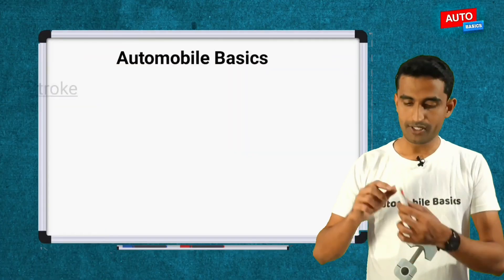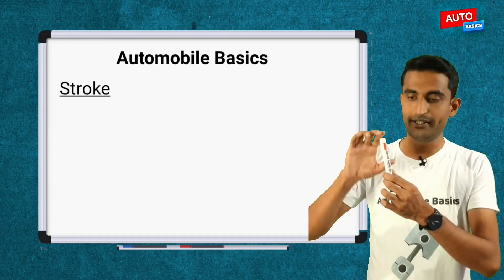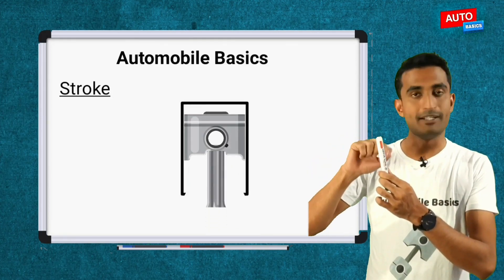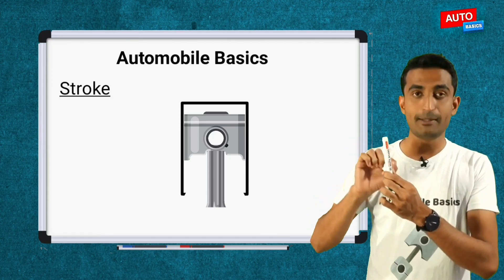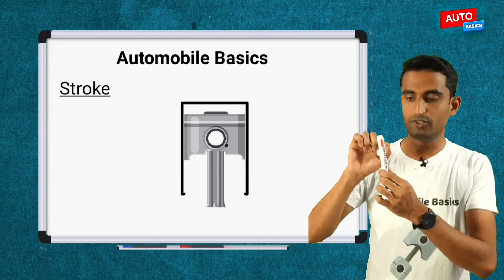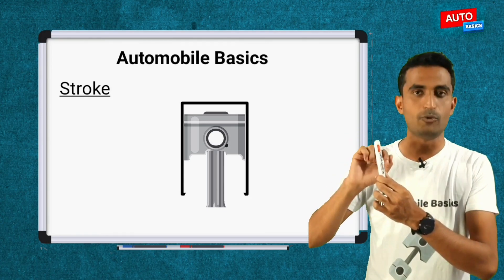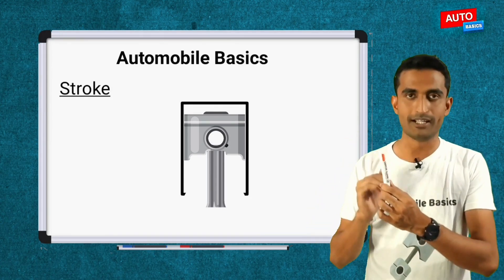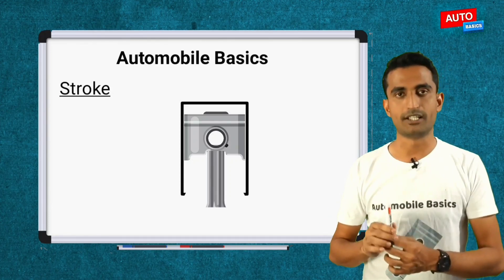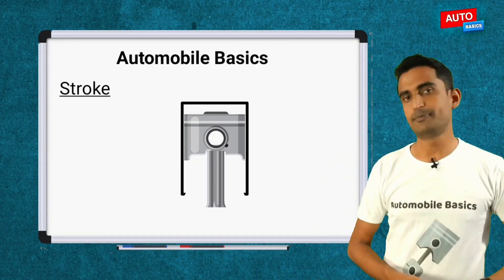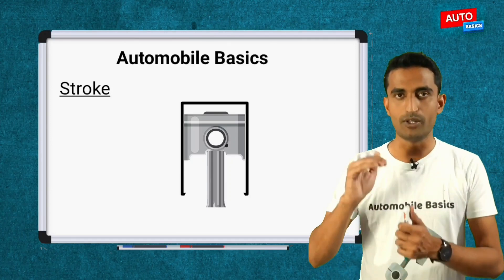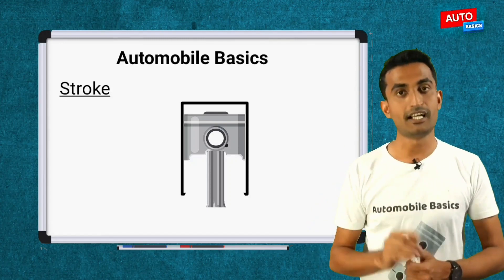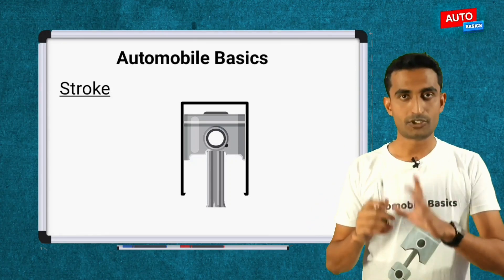Then there is stroke. Stroke is nothing but the piston movement inside the cylinder — up and down movement. The piston moves from top to bottom, that is from TDC to BDC, and from BDC back to TDC. Each one of these movements — TDC to BDC or BDC to TDC — is one stroke.